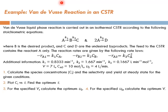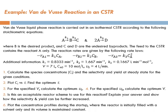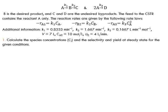For the specified V, calculate the optimum upsilon 0, and for the specified upsilon 0, calculate the optimum V. After finding the optimum tau, if I'm happy with this volume, how should I change upsilon 0 to get to the optimum operating conditions? Is this an acceptable reactor scheme to use for this reaction? Explain your answer and show how the selectivity and yield can be further increased. Finally, plot the concentration profiles during the startup where the reactor is initially filled with a solvent only and its volume is maintained constant.